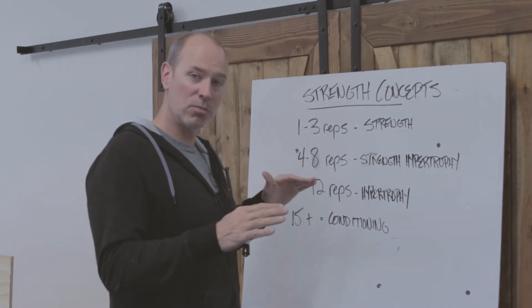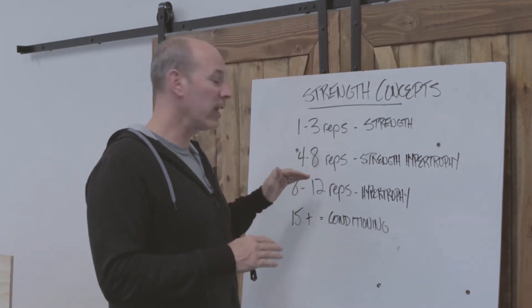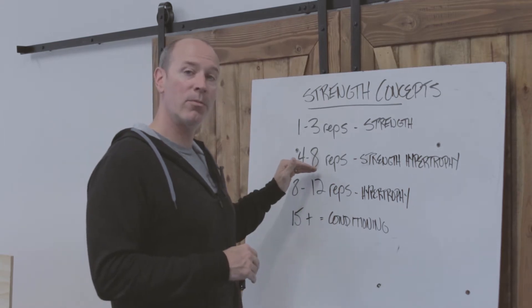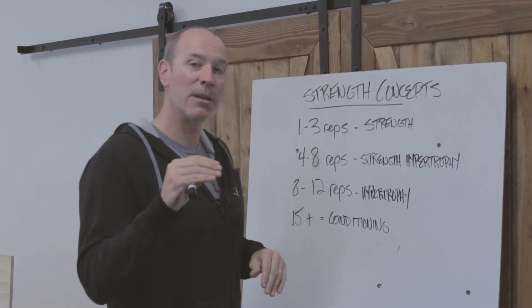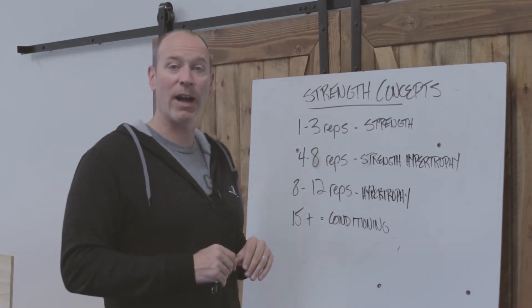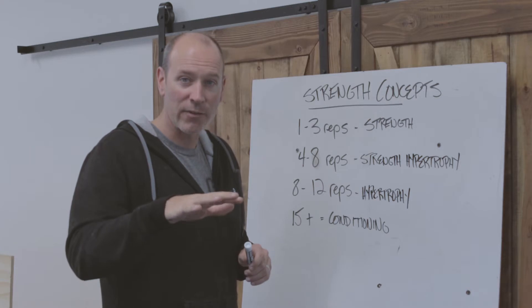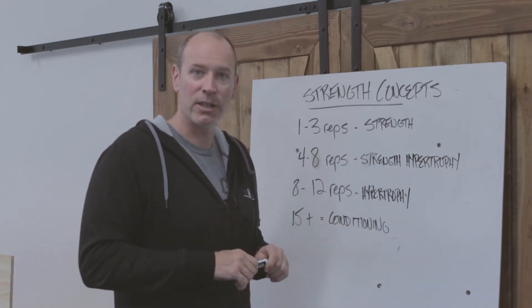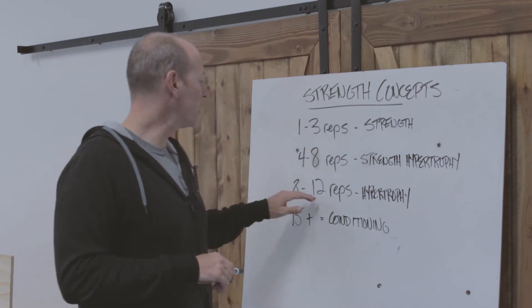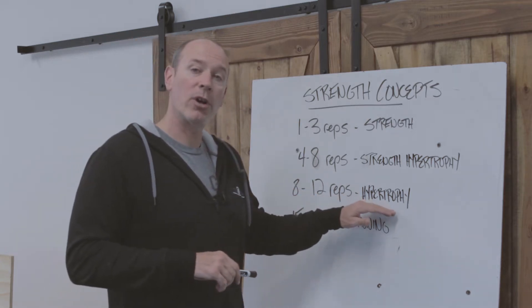Your form has got to be about 90 to 95 percent perfect. We're allowed to have a little bit of what I like to call speed wobble in there, like when you're on a skateboard. Eight to twelve reps is pure hypertrophy.